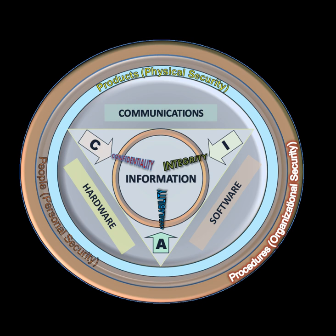In information security, data integrity means maintaining and assuring the accuracy and completeness of data over its entire lifecycle. This means that data cannot be modified in an unauthorized or undetected manner. This is not the same thing as referential integrity in databases, although it can be viewed as a special case of consistency as understood in the classic ACID model of transaction processing. Information security systems typically provide message integrity alongside confidentiality.